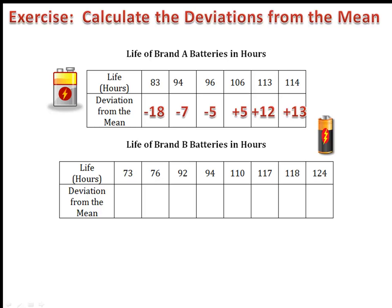Next, let's calculate the deviations from the mean for brand B. Once again, calculate the mean and then do the subtraction. Please pause here and complete the table for brand B. We find that our deviations are negative 27.5, negative 24.5, negative 8.5, negative 6.5, positive 9.5, positive 16.5, positive 17.5, and positive 23.5.